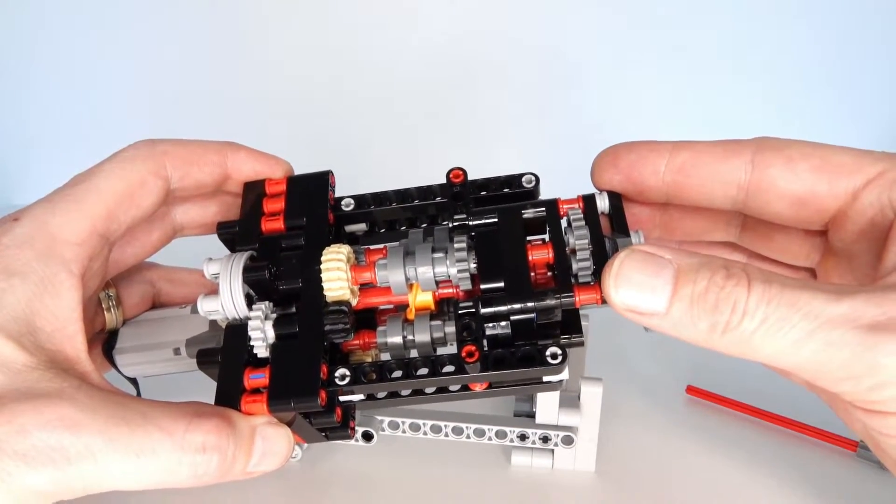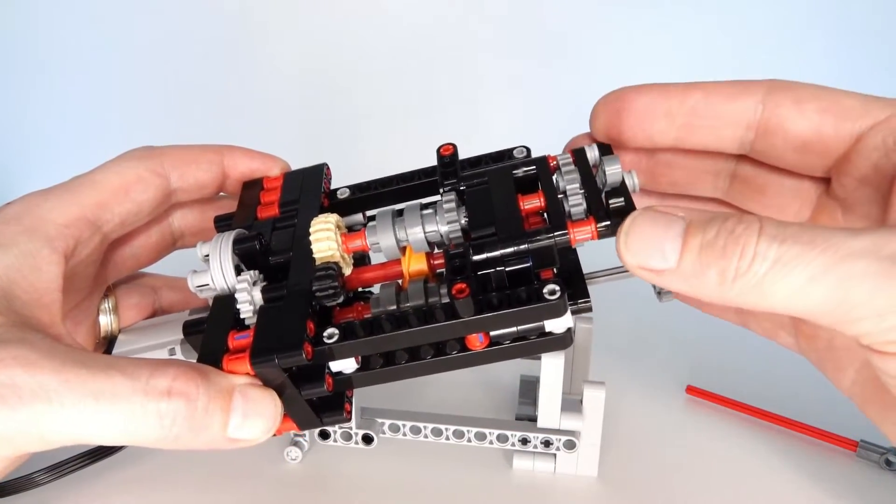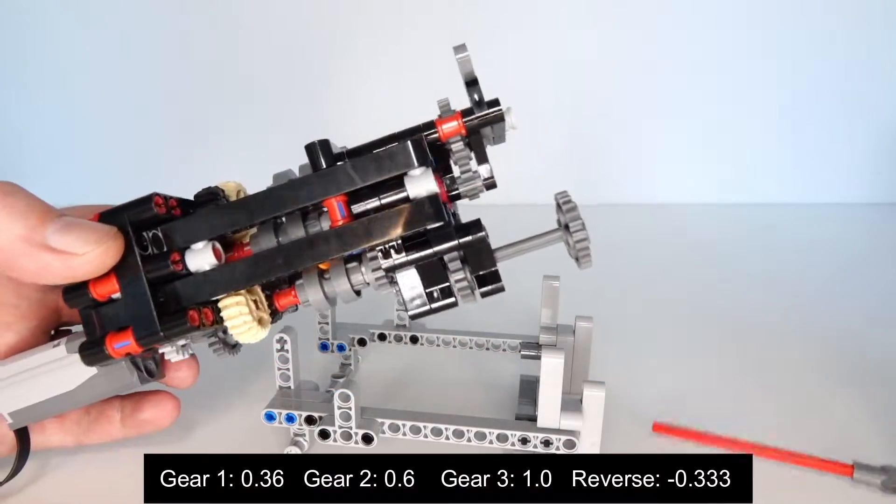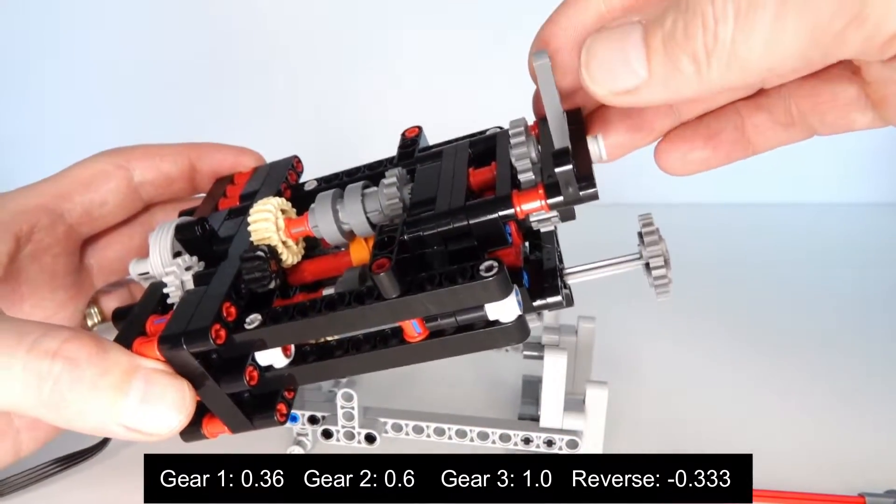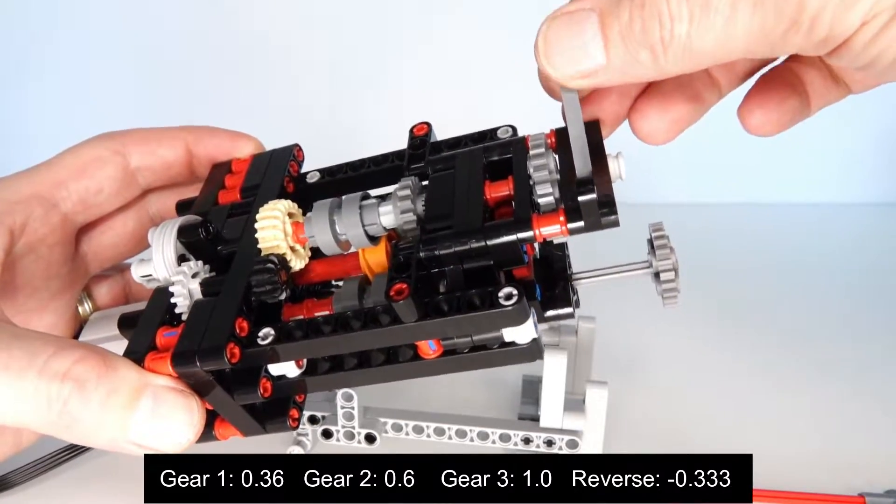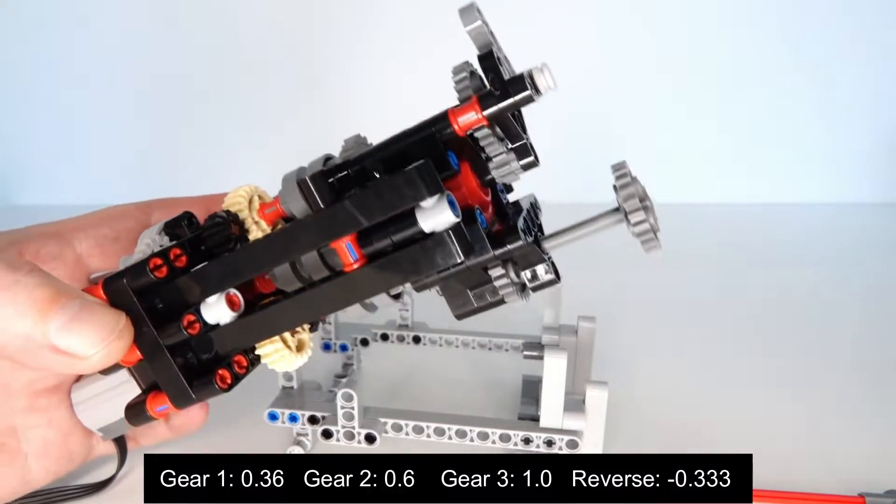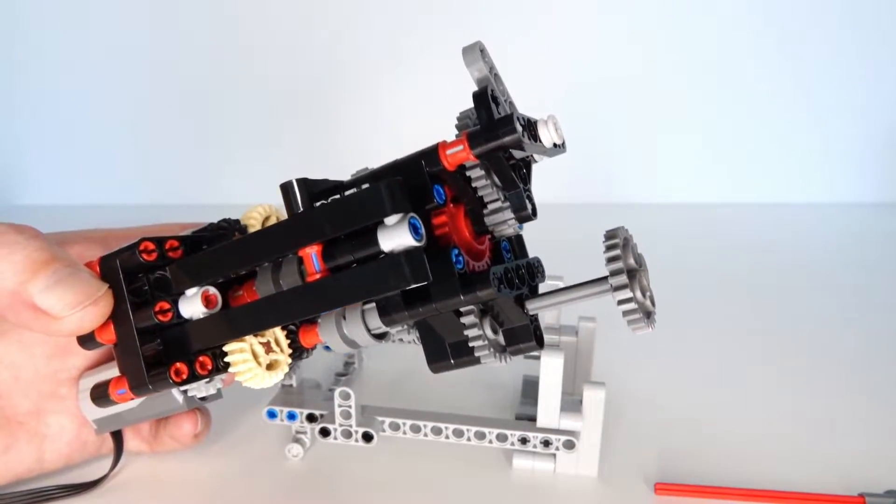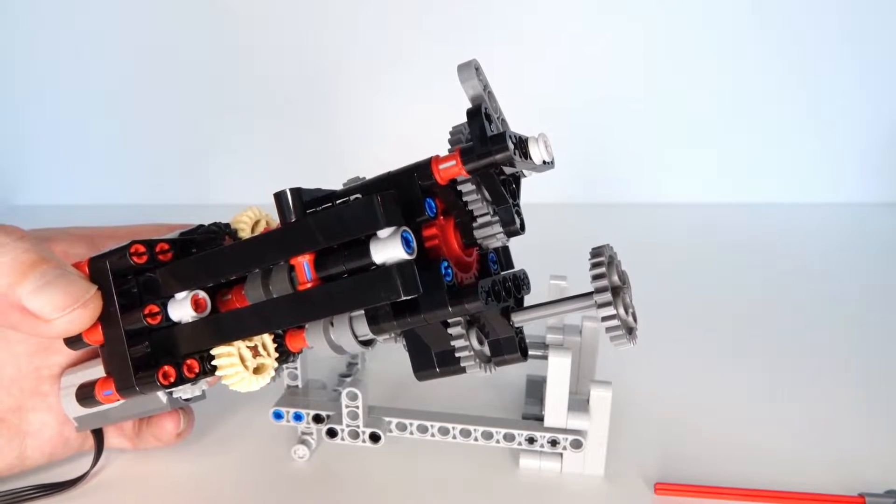The first gear being reverse, then we've got first, second and third. And the gearing ratio between the input and the output for the first gear is 0.36. Then the second gear is 0.6 and the third gear is 1 to 1. And then for reverse it is a gearing ratio of 1 to 3 in reverse. So that means it's going backwards instead of forwards and a ratio of a third to the input axle.